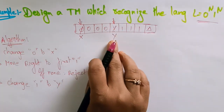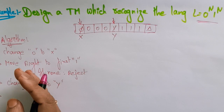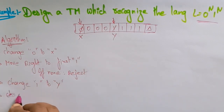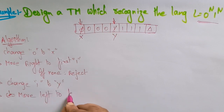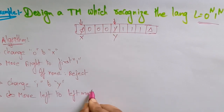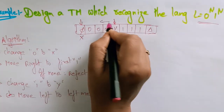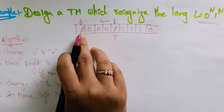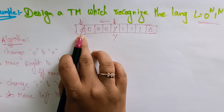So I changed 1 to y. Now I am moving to the leftmost 0 — move left to the leftmost 0. I came back here and now I have to move to the left to find the leftmost 0. This is the leftmost 0.